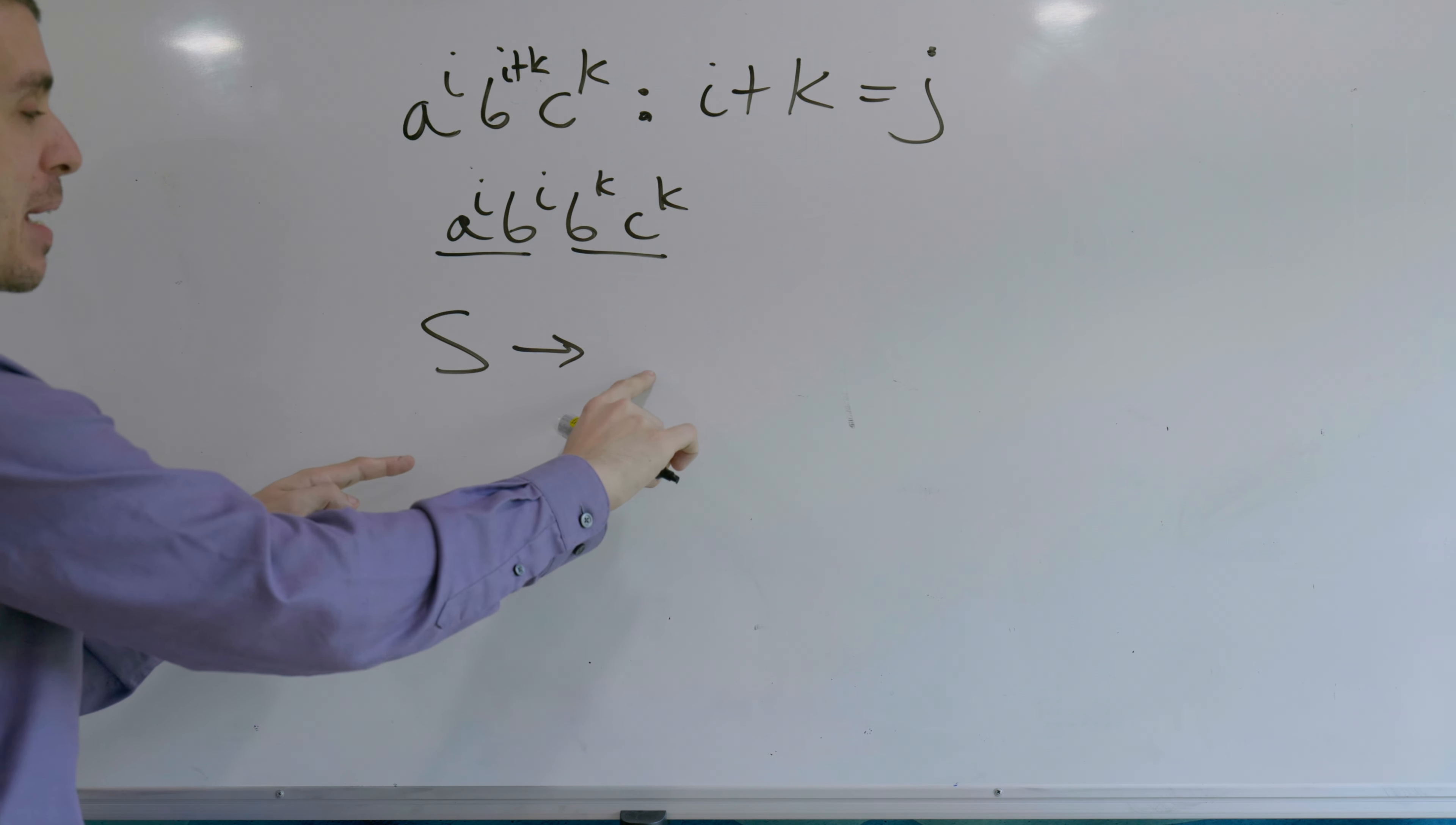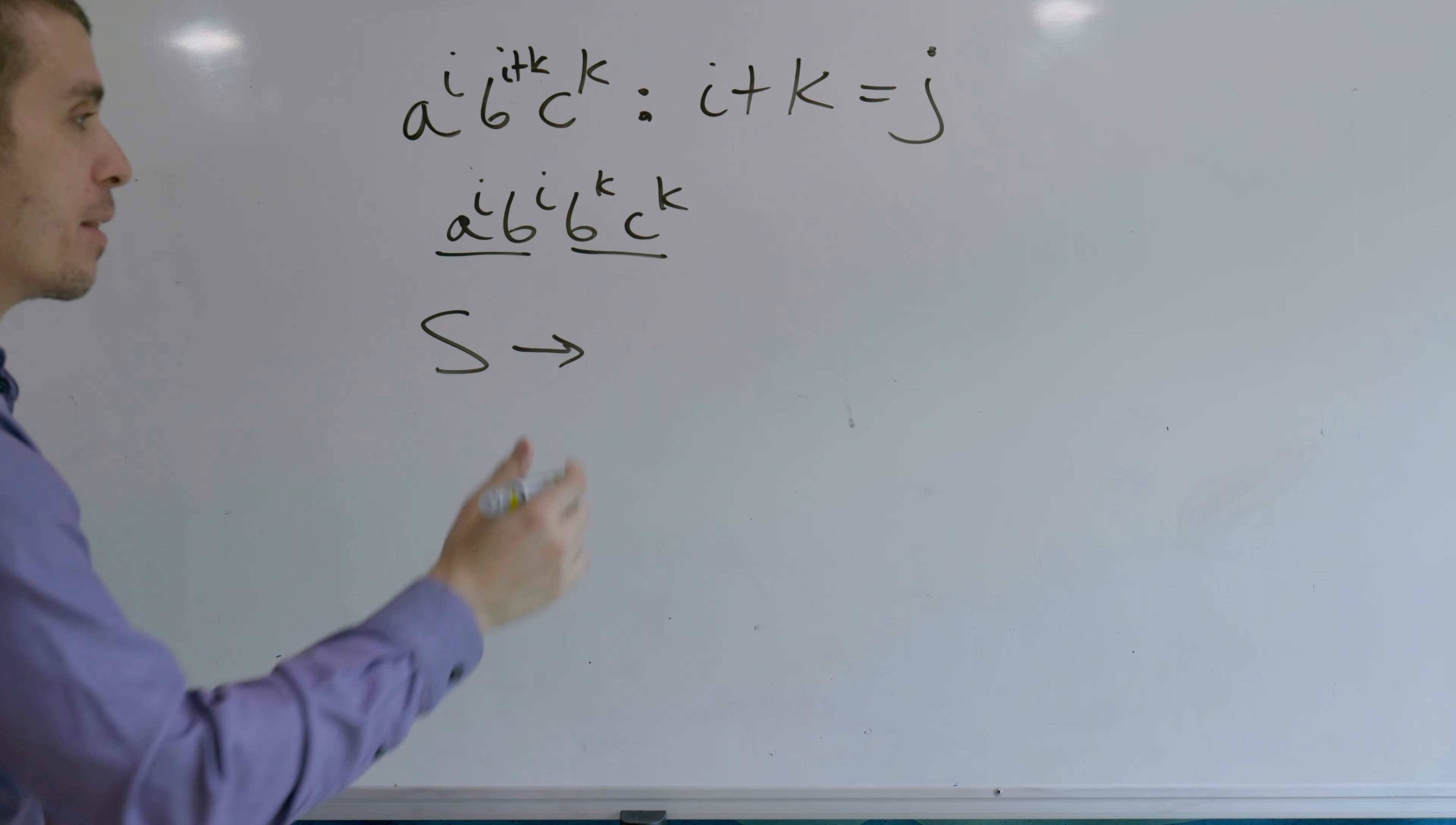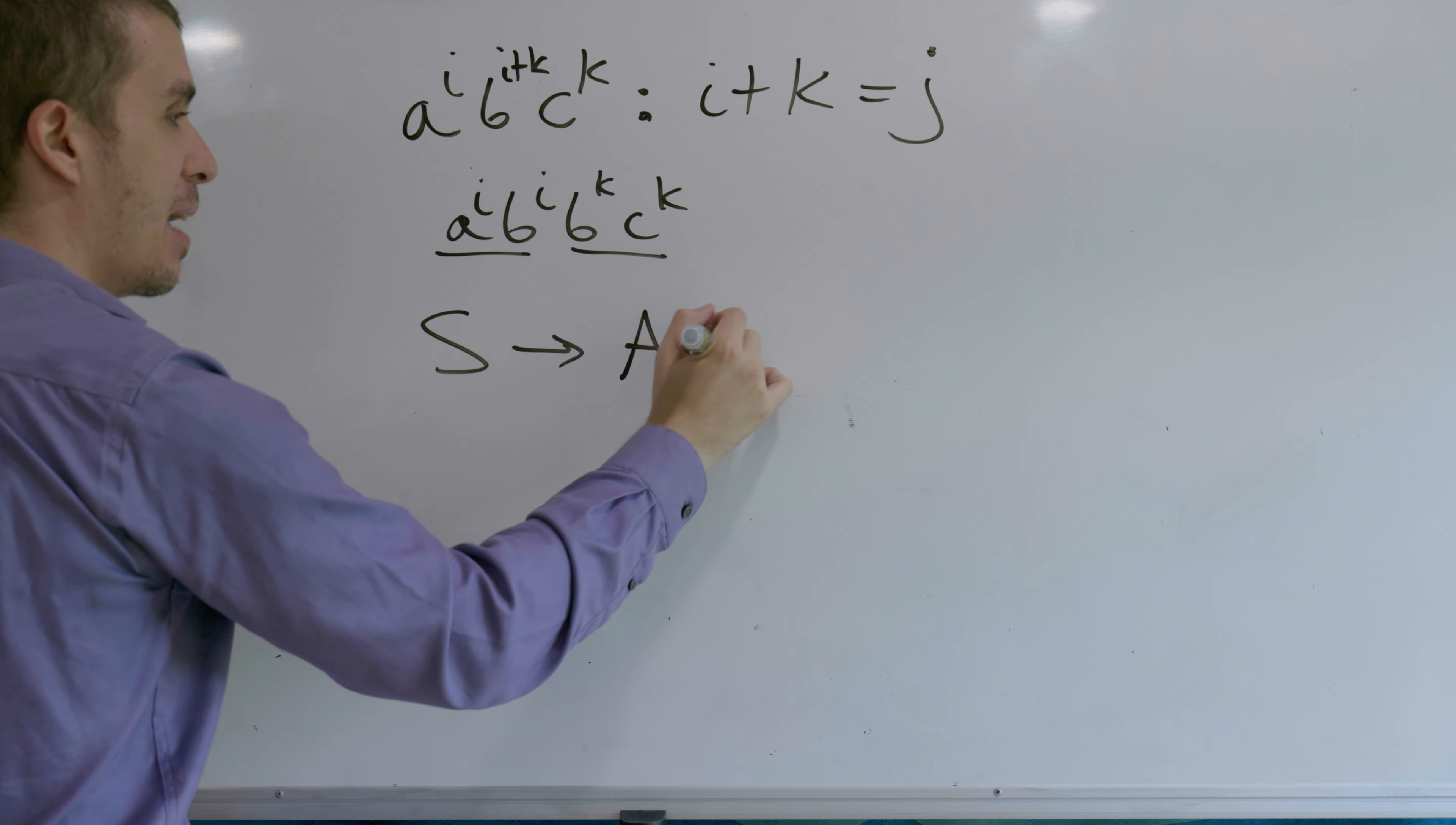So we can think of a solution to this by having a variable S make two variables where one of them is going to make this, and the other one is going to make this, and then concatenate them together. So let's call them A and B.